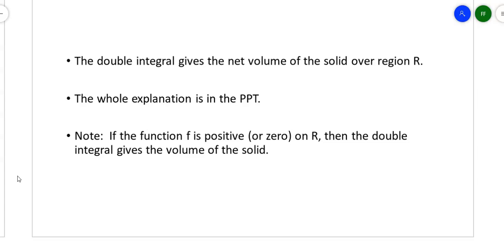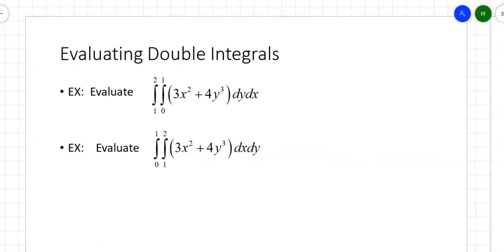What the double integral does is it gives you the net volume. Area under a curve in two dimensions gives you the net area; in double integrals, it gives you the net volume of the solid. Everything above the z-axis is positive, everything below is negative. If the function is positive or zero on the entire region, you're finding the actual volume of the solid. If it dips both above and below, you're finding the net volume, considering everything above z equals zero as positive and everything below as negative.